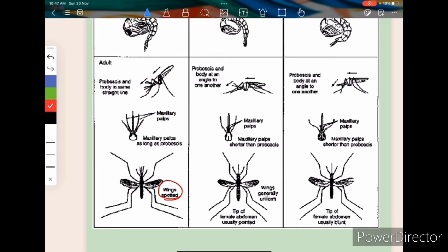You see the adult, it has got spotted wings. Wings are generally uniform here, and the tip of the female abdomen is pointed. These are not many differences. Proboscis is at an angled, but here it is in the same line.